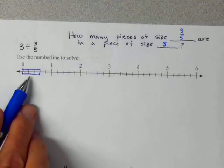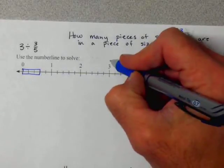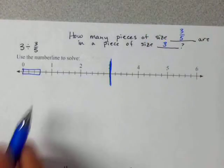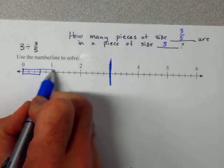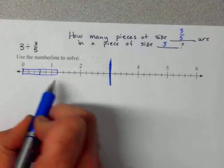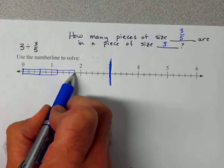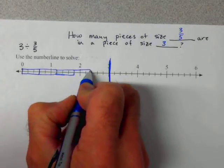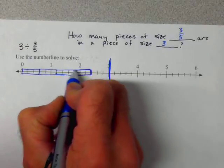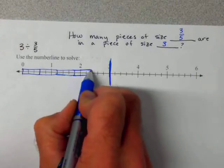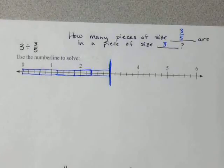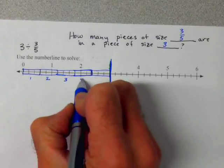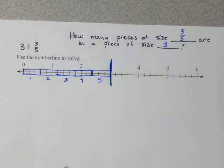Now how many of that piece are in 3? There's 3 down here, so let's figure that out. There's 1 — count 1, 2, 3. There's 2 — count 1, 2, 3. There's 3 — count 1, 2, 3. There's 4 — count 1, 2, 3. It perfectly goes to the end. There are 5 — count 1, 2, 3, 4, 5 pieces fit inside.